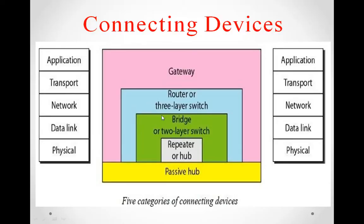Internetworking devices operate at the network layer and the upper layers of the OSI stack model. The basic internetworking devices are routers and gateways. The router operates at the network layer and it is called the three-layer switch.